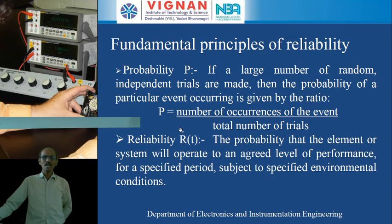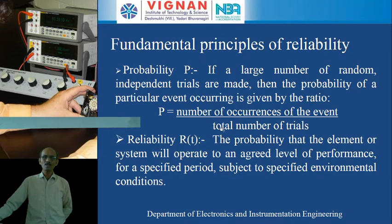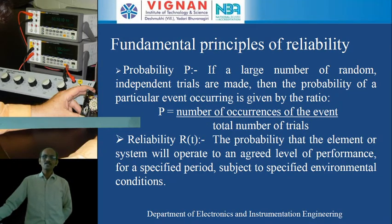The probability P equals number of occurrences of the event divided by total number of trials. In this case, the total number of trials is 100 and the number of occurrences of the event — getting heads — is 30. So the probability equals 30 divided by 100, which equals 0.3. If we get heads all 100 times, then the probability will be equal to 1, meaning the occurrence of that particular event is certain. The probability value ranges from 0 to 1, and probability means it may or may not occur.